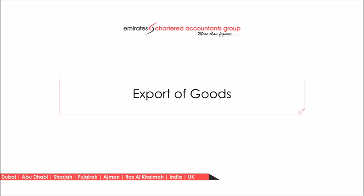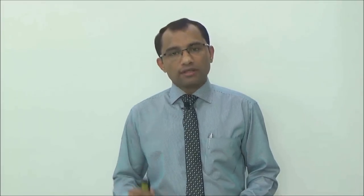First, we will discuss export of goods. To understand tax applicability on export of goods, we need to know the place of supply of goods. The place of supply rule shall be determined based on whether the place of supply is within the UAE or outside the UAE. The basic rule is that at the time of supply, where the goods are located, that is the place of supply of goods.